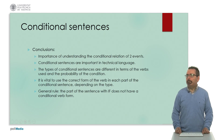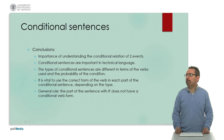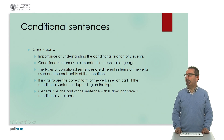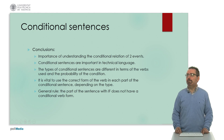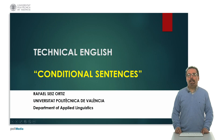As we can see, conditional sentences are very important in technical English and it is very important for the learner to know the relation between the two parts of the condition. The types differ depending on the verb form and the probability of the condition. As a general rule, the part of the sentence with 'if' or the conditional particle does not have a conditional verb form. I hope this has been useful for you. Thank you very much for your attention.